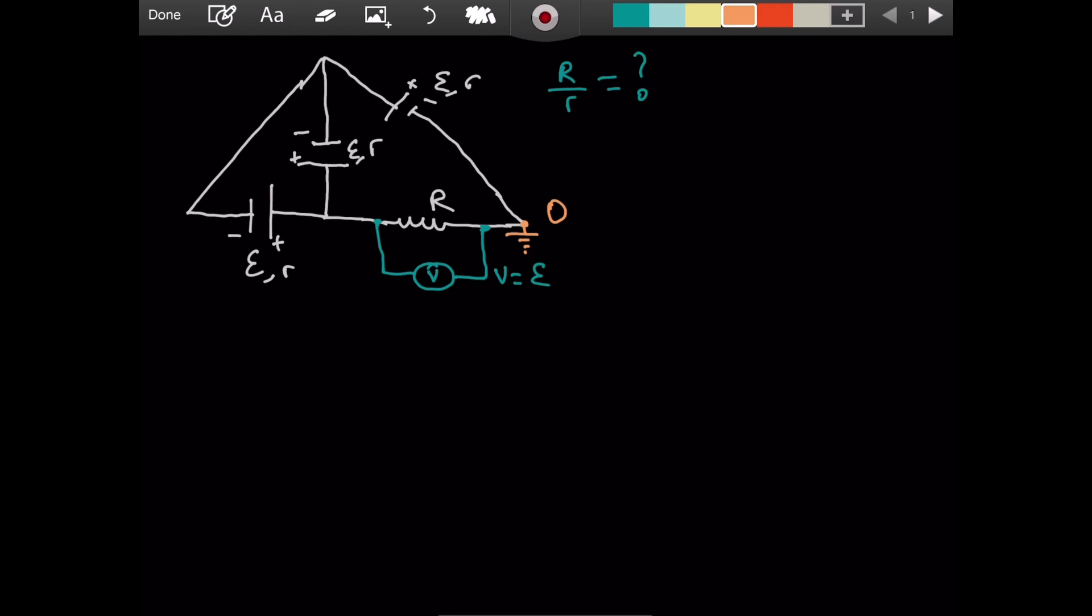And also, if you want, you can call this point VA. It doesn't matter. You get the exact same result. I only choose it to be zero because you got to admit, when you're adding, subtracting, zero is by far the easiest number to deal with. So that's why I choose zero.